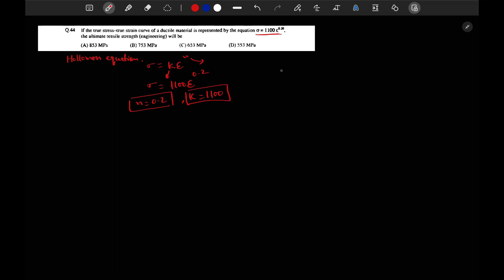At ultimate point, sigma will be equal to n which will be 0.20. So true stress at ultimate point will be 1100 into 0.20 to the power 0.20, which will be equal to 797.25 megapascals.